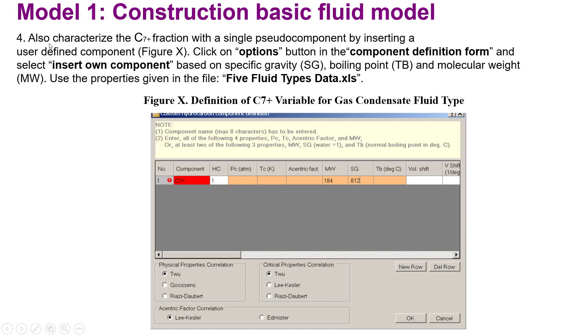This is the demonstration for the definition of C7 plus variables for gas condensate or light oil. You should use C7 plus variables; you can see the property data in the file I supplied. In this interface you can see SG represents specific gravity, TB represents boiling point, and MW represents molecular weight.